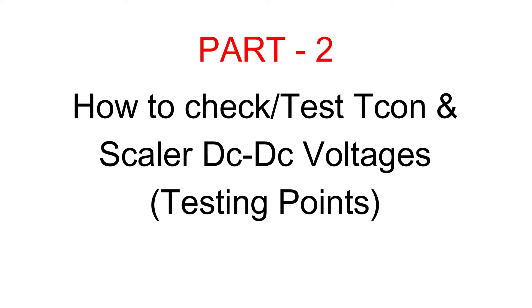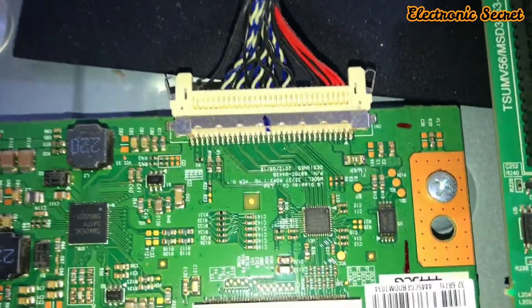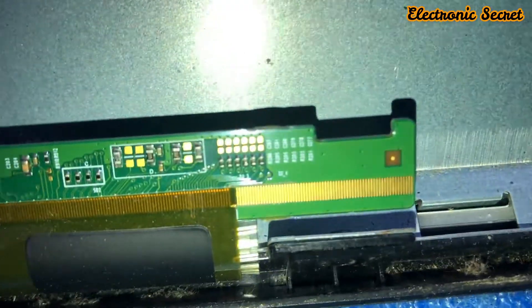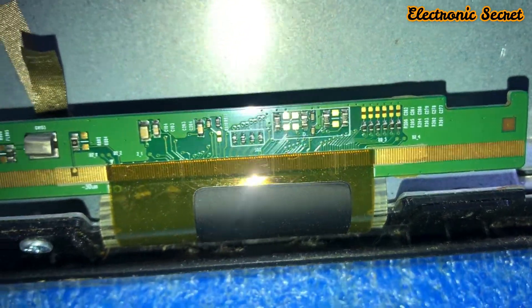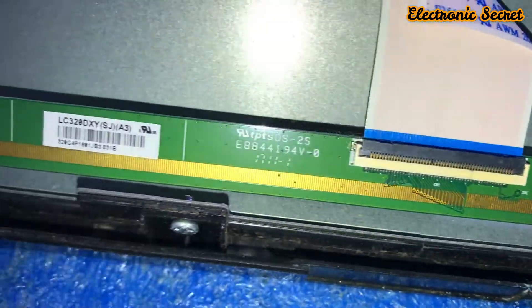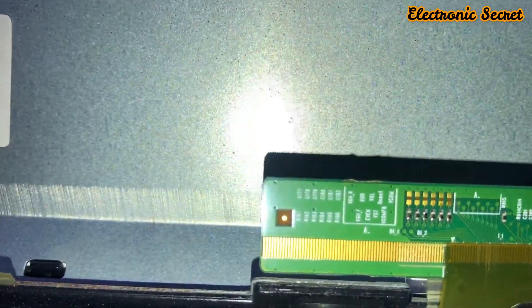It is important to know the function of these voltages and how to check them. The second part of the video covers how to test Tcon and scalar DC-to-DC voltages and their testing points. Some LED TVs have a separate Tcon board with a DC-to-DC IC, while others have the DC-to-DC IC located on the scalar PCB. The checking procedure is the same for both.